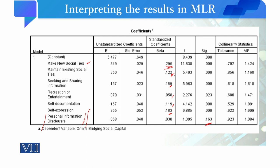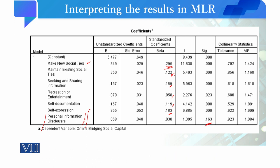Out of these variables, the strongest predictor was 'making new social ties' with a beta of 0.295 — the highest. After that, 'self-expression' had a value of 0.183, followed by 'seeking and sharing information,' then 'maintaining existing social ties,' then 'self-documentation,' and finally 'recreation or entertainment,' which was the weakest predictor of social capital development on online social platforms. This data is also theoretically correct — people motivated to develop or maintain social ties on social media platforms have higher social capital, while those using it only for recreation or sharing personal information generate less social capital. The empirical results reconfirm and are in line with theory.